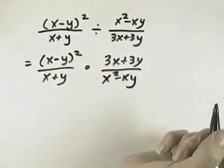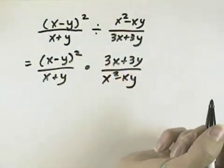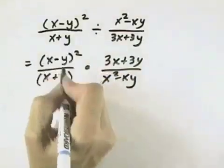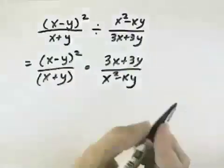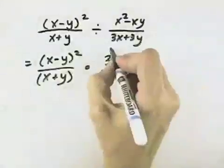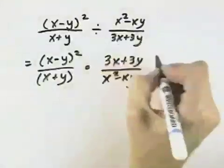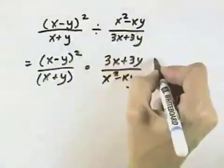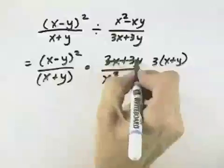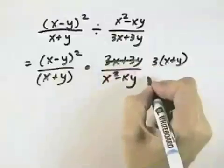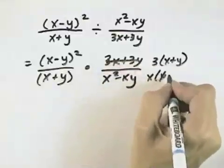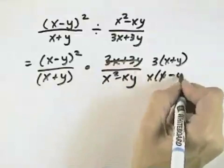Now before we multiply, we'd like to cancel like terms if we can. The first fraction is already factored because neither the numerator nor denominator can be broken down further. But in the second fraction, we could take out a 3, leaving an x plus y. In the denominator, we could take out an x, leaving an x minus y.